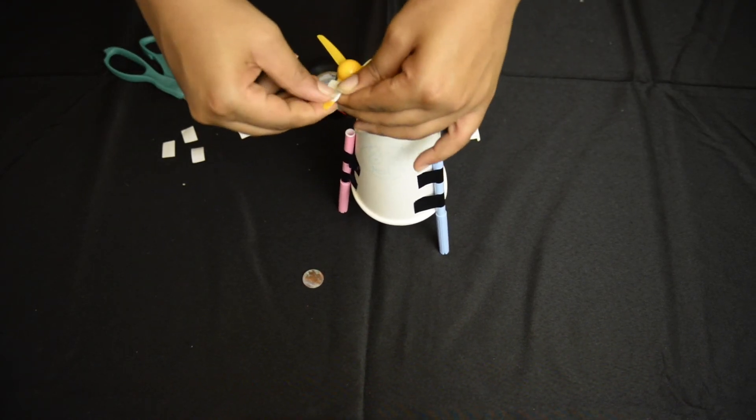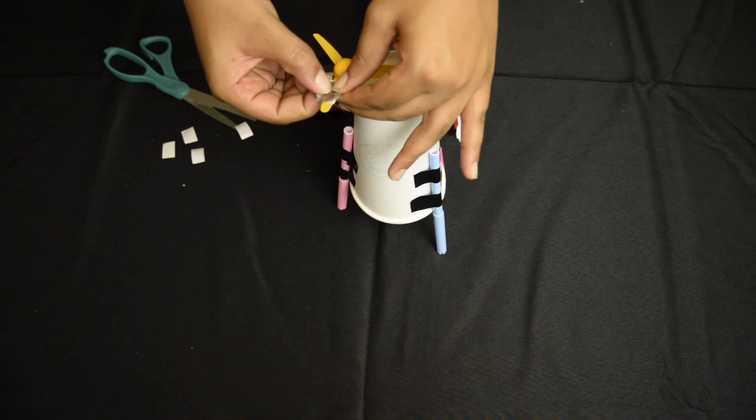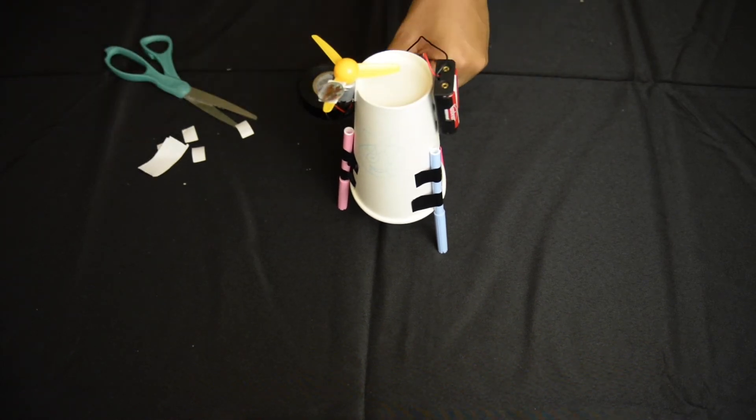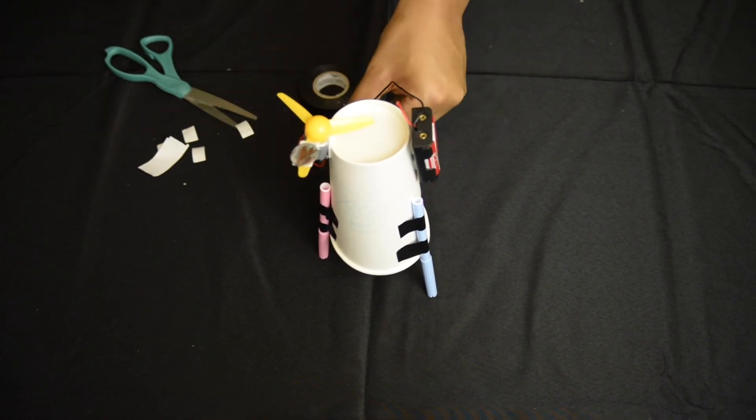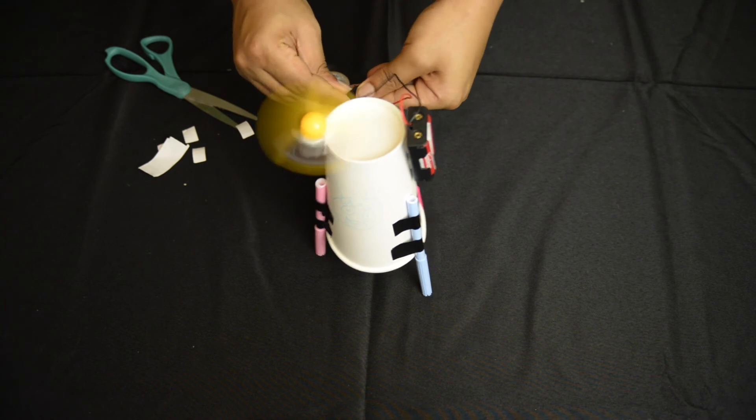Use another piece of double sided tape and attach it to a penny. Place that penny onto the propeller and secure it. Turn it on again and see the difference.